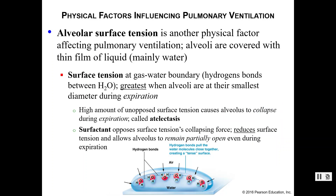Alveolar surface tension is a bit complicated. The alveoli — the little sacs that look like grapes — are covered with a thin film of liquid, mostly water. Surface tension occurs at a gas-water boundary and is created by hydrogen bonds between the water molecules. These hydrogen bonds pull the water molecules closely together, creating surface tension at the boundary — similar to the surface tension at the top of a pool.